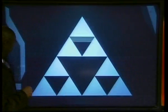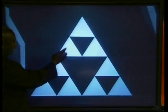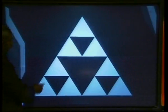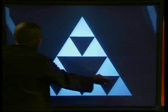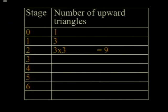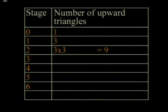At stage two, midpoints of each side of the three new triangles are joined, and we get one, two, three, four, five, six, seven, eight, nine triangles. At stage two we have three times three, which gives us nine triangles. Do you see what pattern we are making?